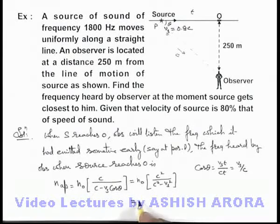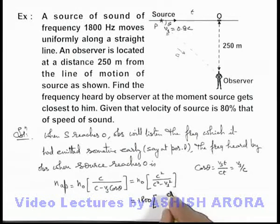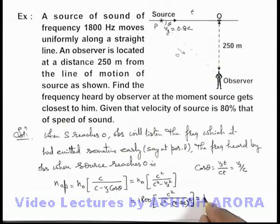If we substitute the numerical values, the frequency of the source is 1800 Hz multiplied by c squared by c squared minus (0.8c) squared.